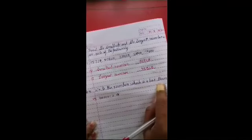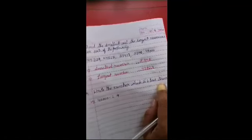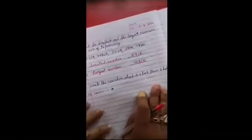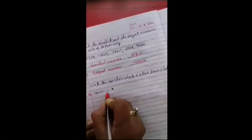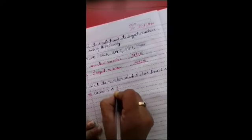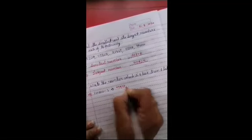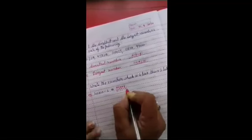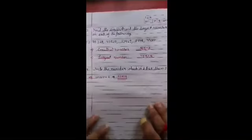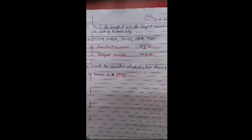Now next question, write the number which is 1 less than 1 lakh. Yarni 1 lakh se 1 sankhya kam. To 1 lakh mein agar hum 1 minus karenge to aega 99,999. Yeh hamari 1 sankhya less ho gi. Remaining questions dono exercises ke aapko homework mein karne copy mein. Thank you student, have a nice day.